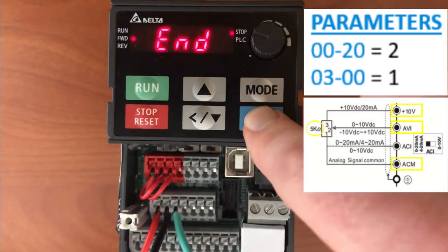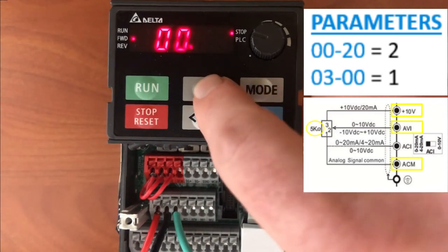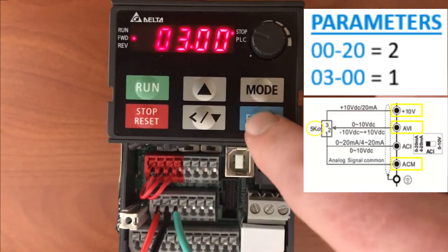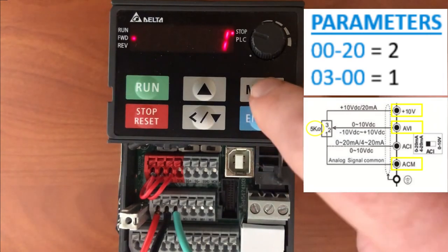Speed reference set to 2 for analog input, and AVI set to 1 for frequency reference on my AVI terminal.